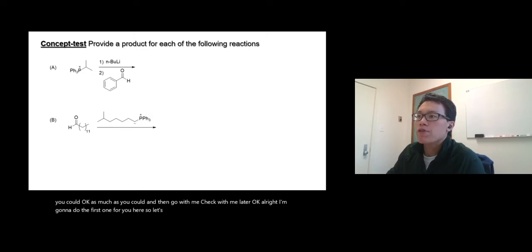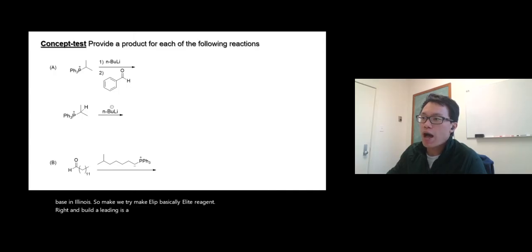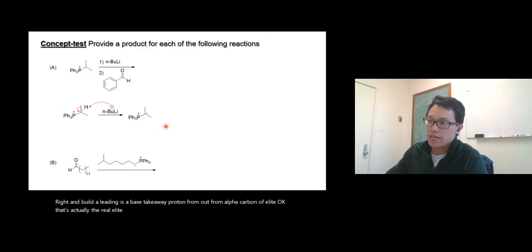There are two steps here. The first step is adding a base to ylide to make the ylide reagent. Lithium is the base that takes away the proton from the alpha carbon of ylide. The first compound is not a ylide yet, but the product here is the ylide reagent.